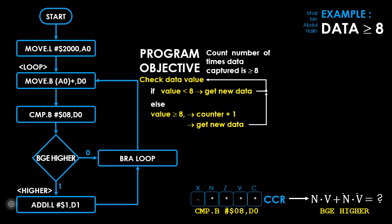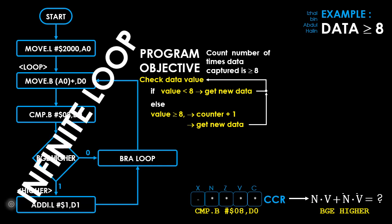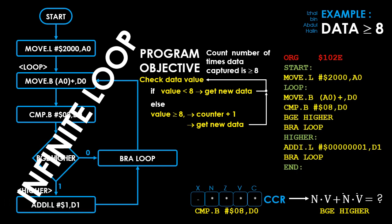When the branch to higher occurs, register D1 is incremented by 1 using an add instruction. D1 will be a counter that counts the number of times the data checked is greater than or equal to 8. Then it moves to the BRA loop instruction. Note that the program never ends because of how the loops are designed — this is called an infinite loop. Here is the assembly language program from our flowchart.